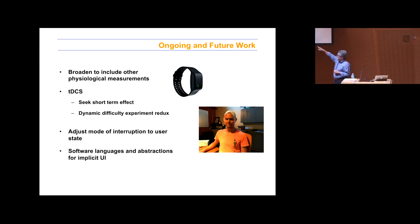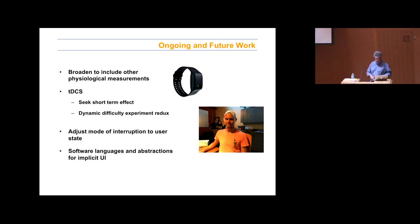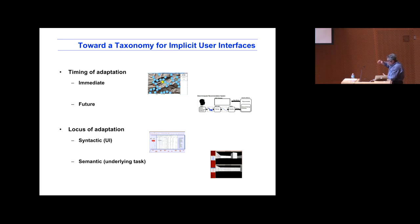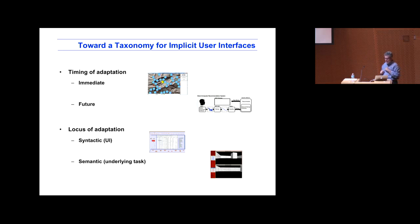We're currently running an experiment where we're going to change the mode of interruptions — most interruption projects just postpone interruptions, but we're thinking about giving the interruption by a different mode depending on your mental state. Another thing we're interested in is a tentative taxonomy for these kinds of interfaces — a two-dimensional taxonomy. In some cases when the brain state changes, something happens right away, like an extra airplane appears. In some cases it changes something in the future, like when a brain measurement changes future movie recommendations. And in some cases it changes the user interface only, while in others it changes the actual job you have to do.